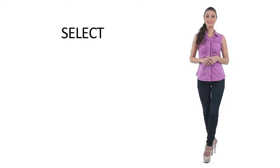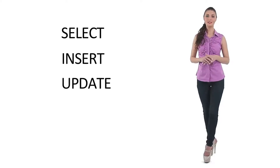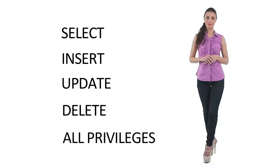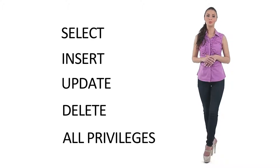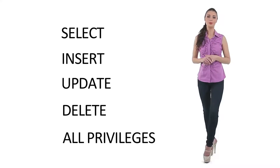Privileges in SQL can be granted on objects like tables or views. SQL provides five types of privileges: select, insert, update, delete, and all privileges. The first four give the user the ability to manipulate data in the way the keyword describes. The fifth one, all privileges, gives the user the power of all four combined.